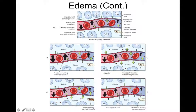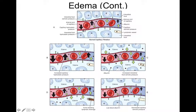There's also interstitial fluid osmotic pressure — a pulling pressure where, due to solutes in the tissue, it can pull water back out. So you have arrows going in and out of the blood vessel. Typically these should all be balanced. If they're not balanced, that may lead to edema.